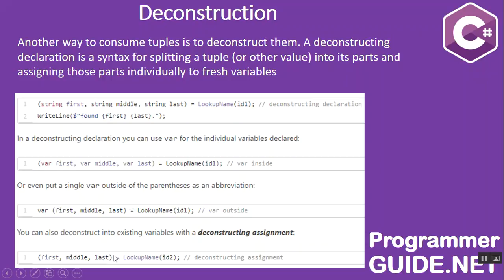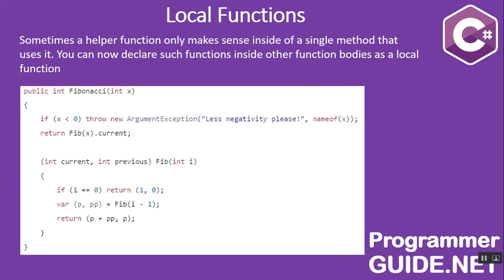Local functions. Sometimes a helper function only makes sense inside a single method that uses it. You can now declare such functions inside other function bodies as local functions. Here there is a main function called Fibonacci, and inside it there is also a local function called Fibonacci that takes an integer value and returns a tuple of current and previous values. This local function is available only inside the Fibonacci method.